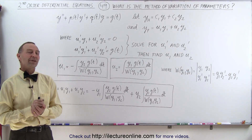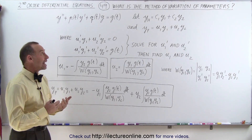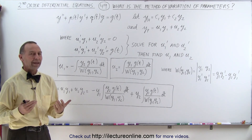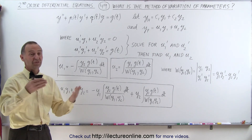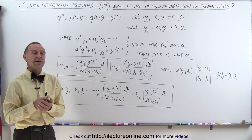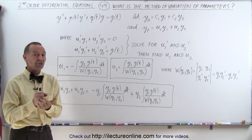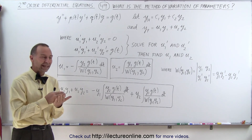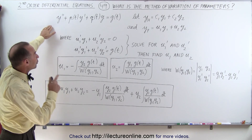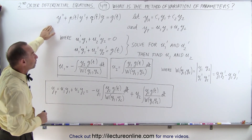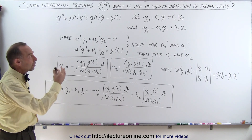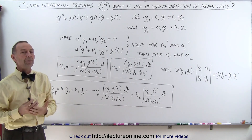Welcome to iLecture Online. We've finally come to the method of variation of parameters. In the previous set of videos in this series, we've seen how we use the method of undetermined coefficients to find both the homogeneous and the particular solution to a second order non-homogeneous differential equation. We're going to do the same thing now, but using a different method called the method of variation of parameters.